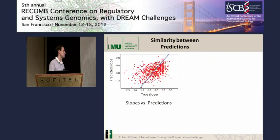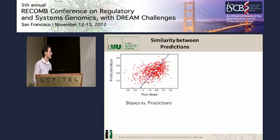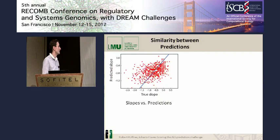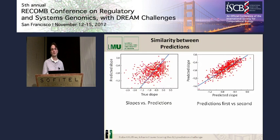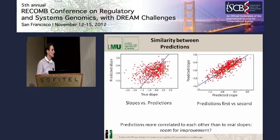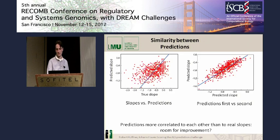The scatter plot compares the true slope from the database against the predicted slope by participants of the challenge. Points closer to the diagonal are predicted very well; the farther from the diagonal, the more error in the prediction. Comparing solver number one and solver number two directly, their predictions are much more correlated with each other than with the real slopes, which hints that there is room for improvement in further prediction approaches.